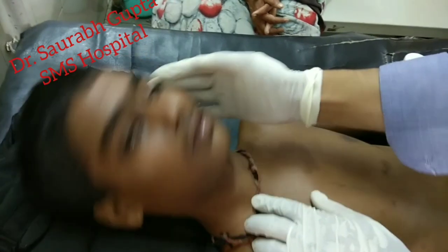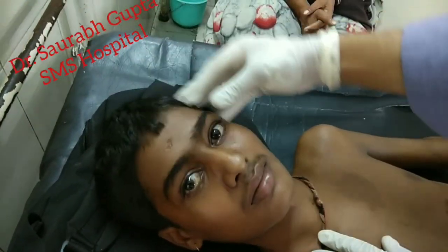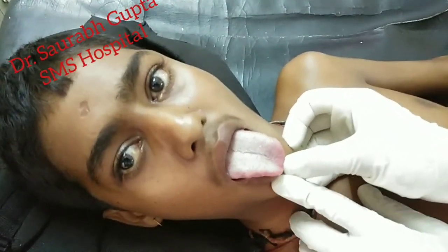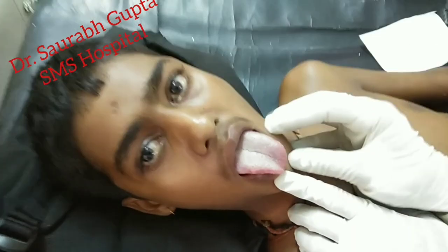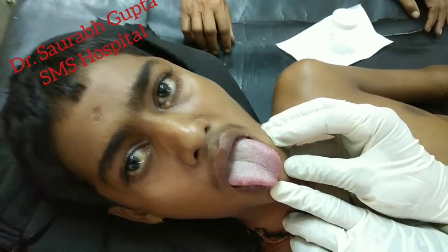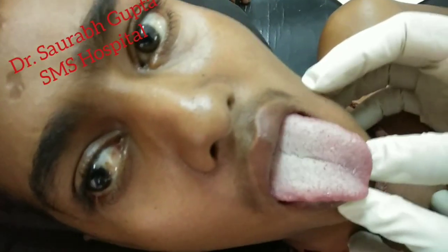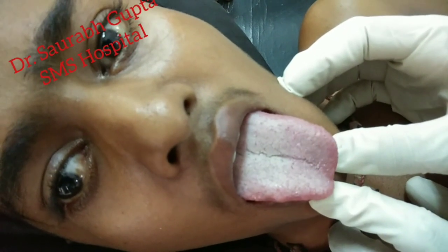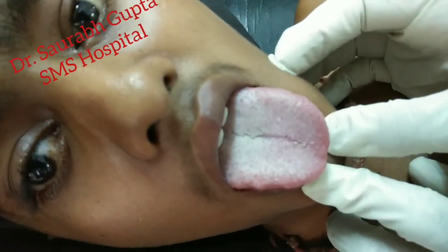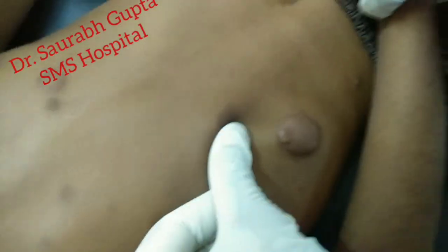So here we can see the mass lesion or node-like lesion in the neck. If you carefully observe, the right eye is a little bit bulged out compared to the left eye. And there is fasciculation we can see here in the tongue. Some cystic node-like structures we can see on the skin.